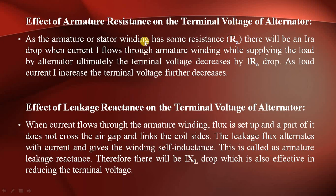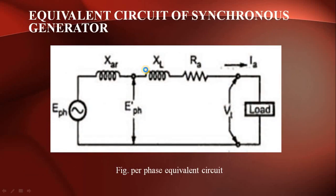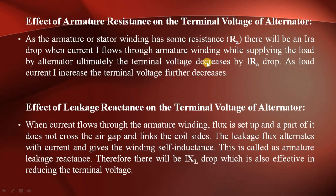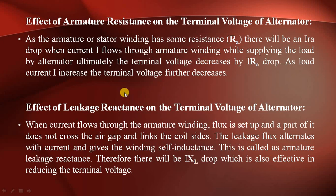To understand the armature resistance effect on terminal voltage: the alternator has armature winding resistance RA. When armature winding current flows while supplying the load, there is an IRA drop. When load current IA increases, the IRA drop increases and the terminal voltage decreases. This is the effect of armature resistance on the terminal voltage of the alternator.